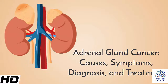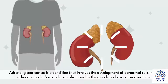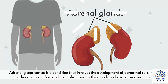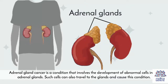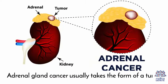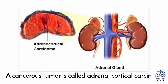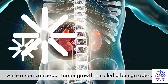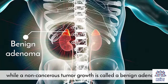Today's topic is Adrenal Gland Cancer – Causes, Symptoms, Diagnosis and Treatment. Adrenal gland cancer is a condition that involves the development of abnormal cells in the adrenal glands. Such cells can also travel to the glands and cause this condition. The adrenal glands are located on top of the kidneys, and cancer usually occurs in the adrenal cortex, the gland's outermost layer. Adrenal gland cancer usually takes the form of a tumor. A cancerous tumor is called adrenal cortical carcinoma, while a non-cancerous tumor growth is called a benign adenoma.